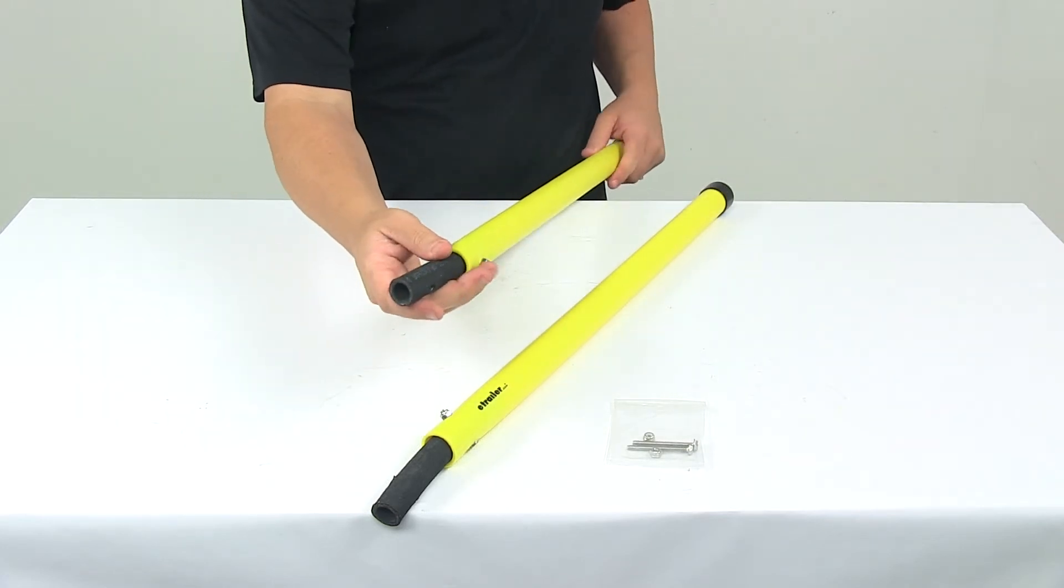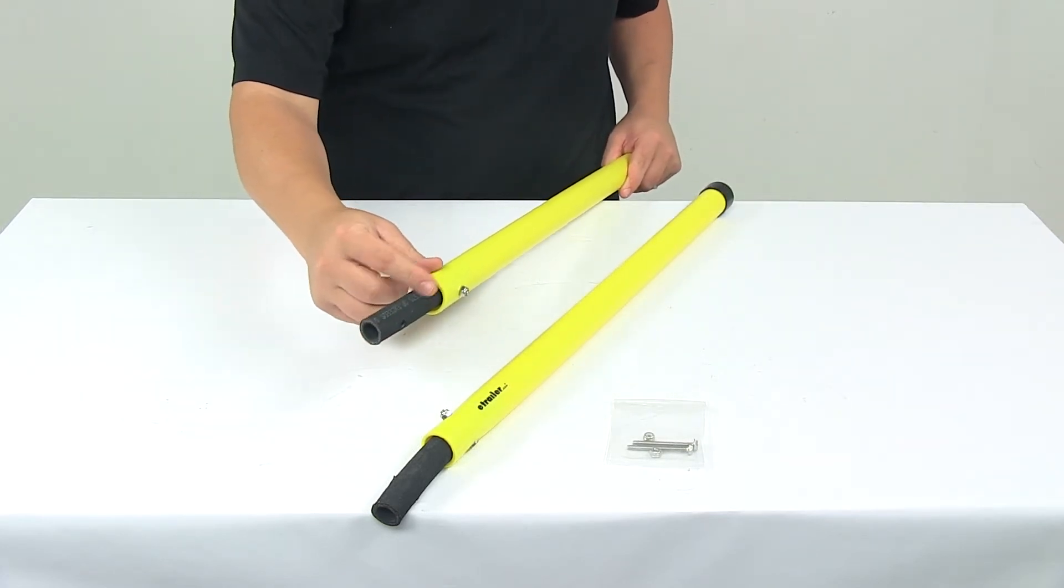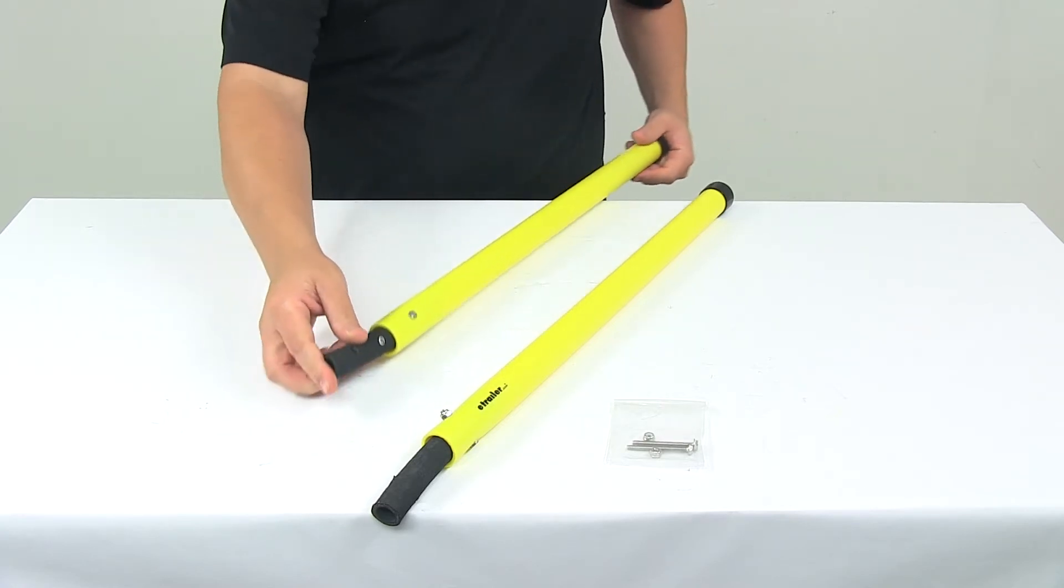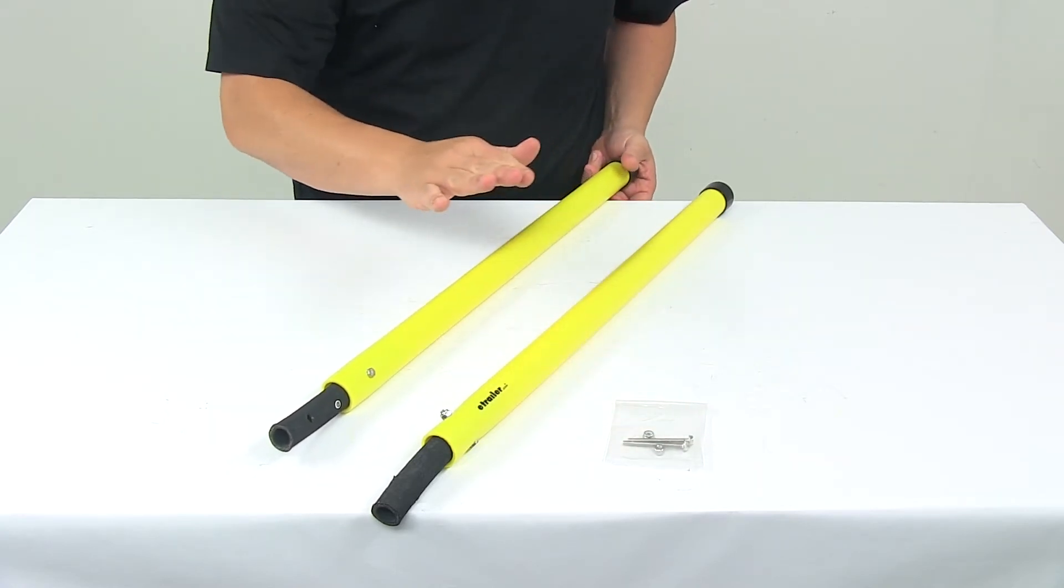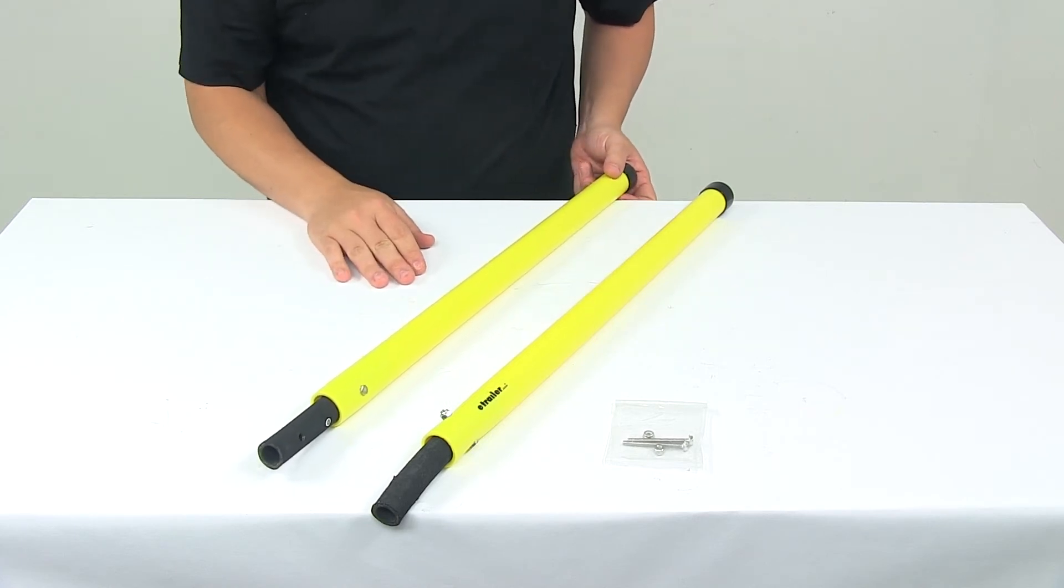The mount base, that's this portion here, measures 3 and 1/4 inches long by about 1 inch in diameter. It comes with installation hardware. Both guides are included, and the product is made in the USA.